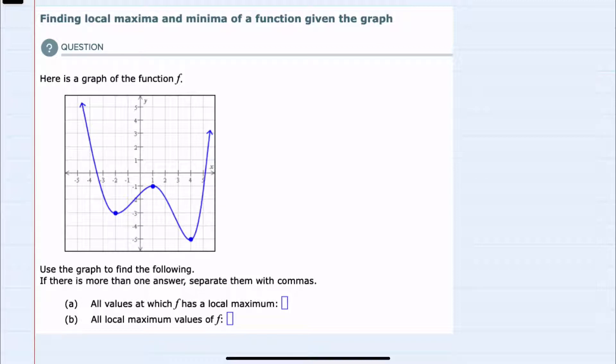First, the values for which f has a local maximum, and b, all local maximum values of f.